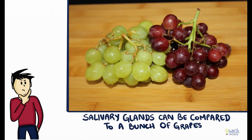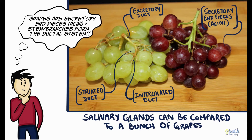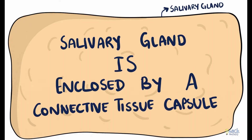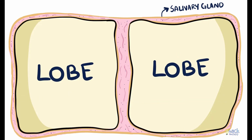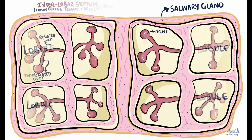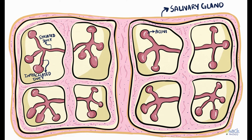The architecture of the salivary glands can be compared to a bunch of grapes, where the grapes are the secretory end pieces and the stem or branches are the ducts. Salivary glands are enclosed by a connective tissue capsule that branches into interlobar septa to divide the parenchyma into different lobes. These lobes are further divided by interlobular septa into different lobules. A lobule houses secretory end pieces, the intercalated, and the striated ducts — hence intercalated and striated ducts are called intralobular ducts.